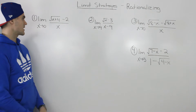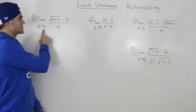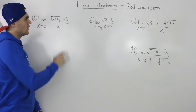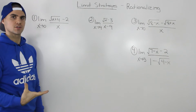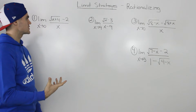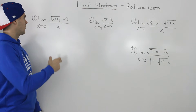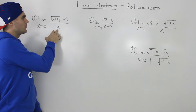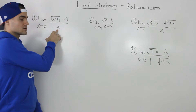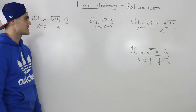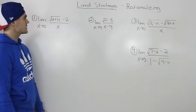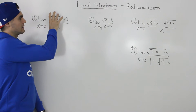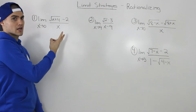Moving on to our first example: we have the limit as x approaches 0 of the square root of x plus 4 minus 2, all over x. First thing you check with limits — can you make a direct substitution? Well, if we sub in 0 for x, the denominator is going to be 0 and we can't be dividing something by 0. So that won't work. So let's try to get rid of this radical in the numerator by rationalizing.